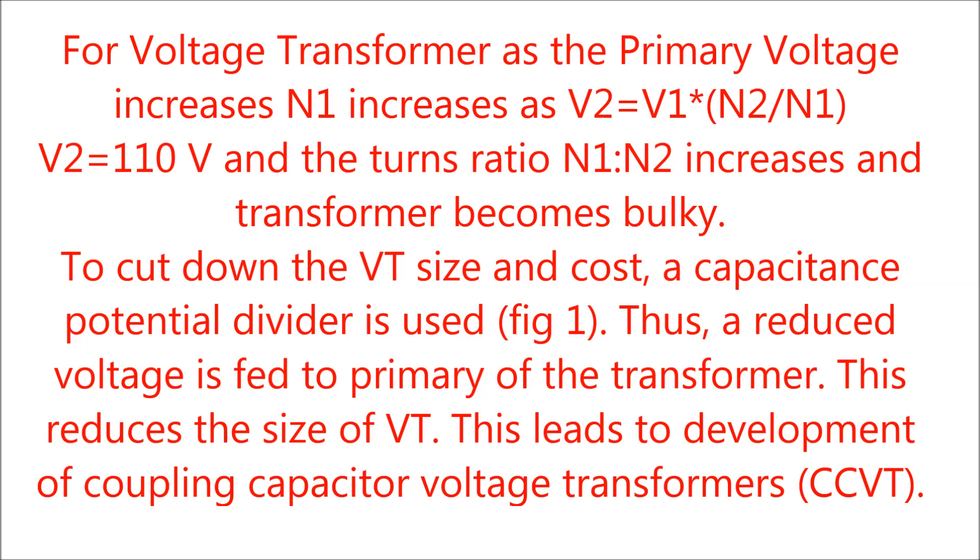Therefore, to cut down the VT size and cost, a capacitor potential divider is used as shown in figure 1. This reduced voltage is fed to the primary of the transformer, which also reduces the size of the VT.